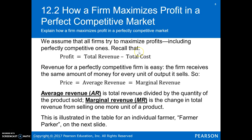Our assumption throughout all these various models is that each firm is trying to maximize profits, even the perfectly competitive one. Profit is going to be total revenue minus total cost. Total revenue is just P times Q — the price that the good is sold for times the quantity sold. Total cost includes implicit costs and explicit costs. That difference between total revenue and total cost is profit.